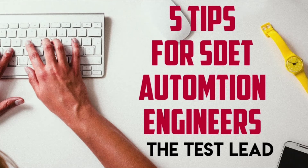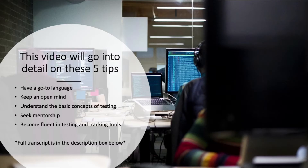Hey YouTube, it's the Test Lead and today's video is 5 Tips for SDET Automation Engineers. Automation testing can be described as the process of automating manual testing. The purpose of testing is to find bugs and defects in a program as early as possible. Every application should be tested before it is automated to confirm it is bug-free. The benefit of automation testing compared to manual testing is the speed and efficiency that tests can be run at.